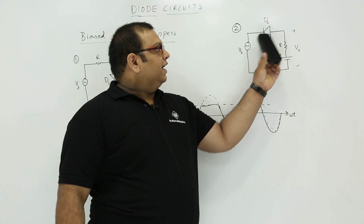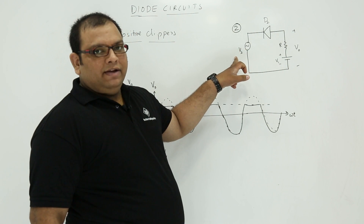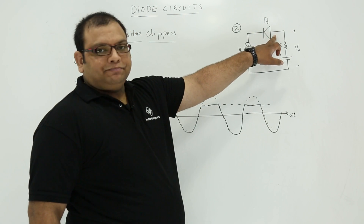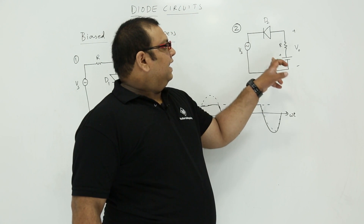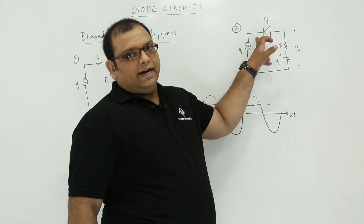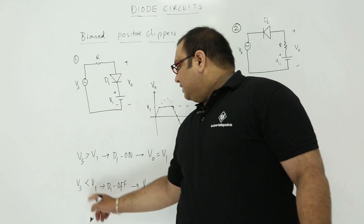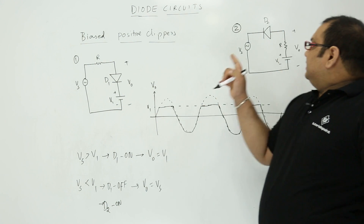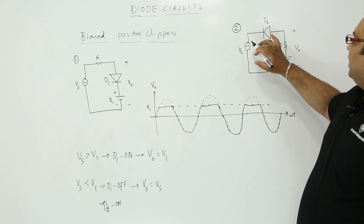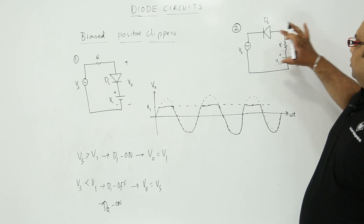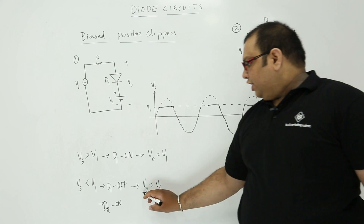Now let us see the other circuit. Here also we verify the conditions when the diode is conducting and when it is not. Observe: this is the negative side and this is the positive side. At the positive side we have voltage V1, and at the negative side we have supply Vs. The diode will conduct when the positive side is more than the negative side. So the condition here is when Vs is less than V1, diode D2 will be in on condition. When it is conducting, the voltage across the output is same as Vs, so V0 equals Vs.